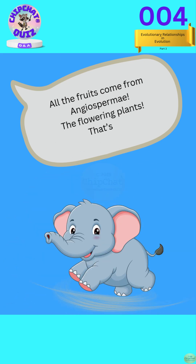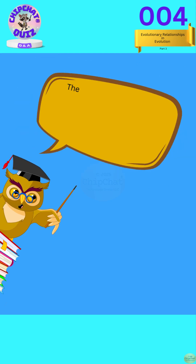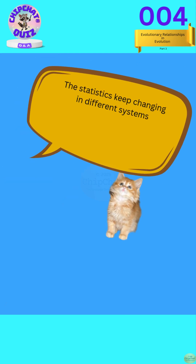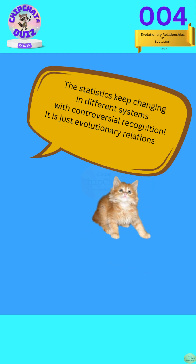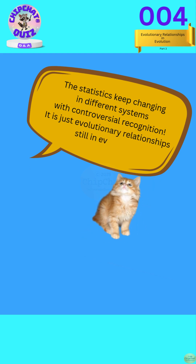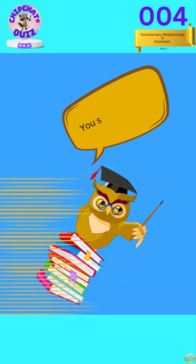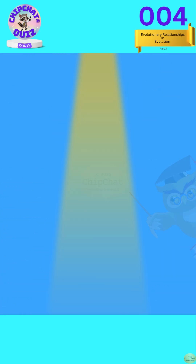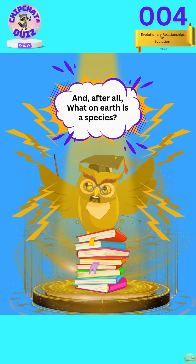That's it. The statistics keep changing in different systems with controversial recognition. It is just evolutionary relationships still in evolution. You stole my words. And after all, what on earth is a species?